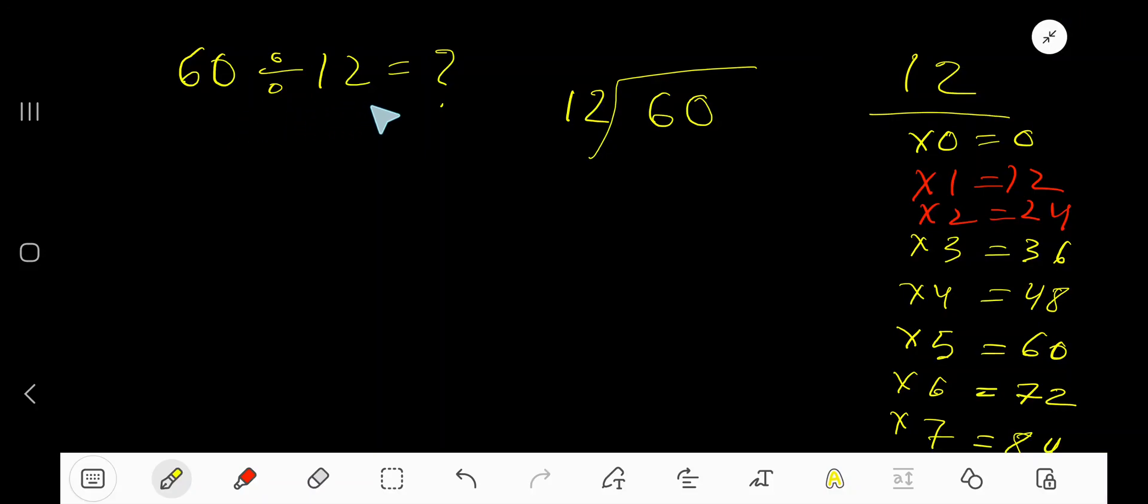60 divided by 12. Here 12 is a divisor, so we need the multiplication table of 12. 12 times 0 is 0, 12 times 1 is 12, 12 times 2 is 24, 12 times 3 is 36, 12 times 4 is 48, 12 times 5 is 60.